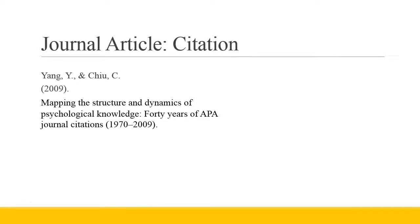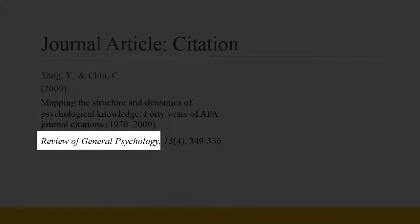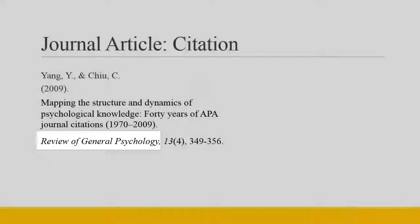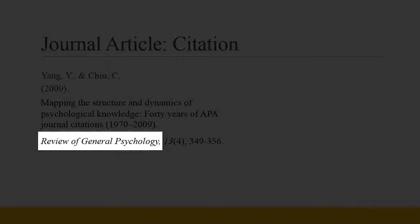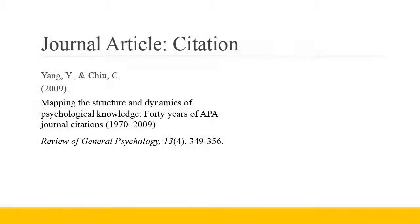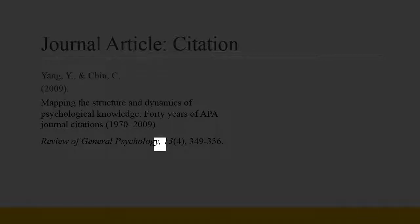After the title of the article, we want to supply the information about the journal from which we pulled the article. When supplying information about the journal, remember: Number one, the journal title should be written in title case — each word, except for prepositions, should be capitalized. Number two, the title of the journal should be italicized. Number three, after the title of the journal, use a comma.